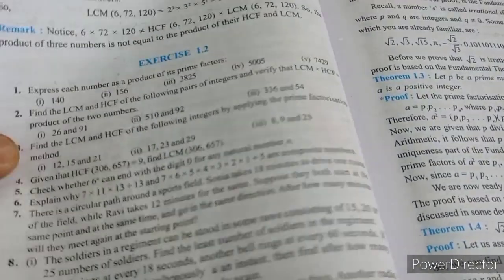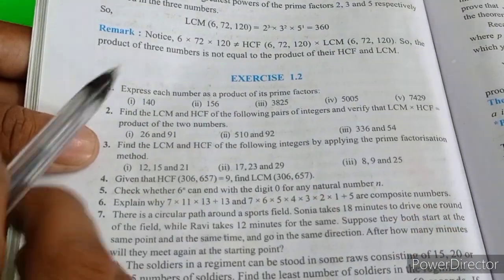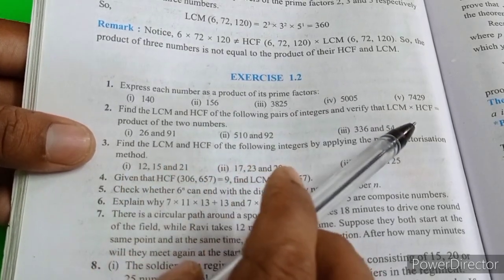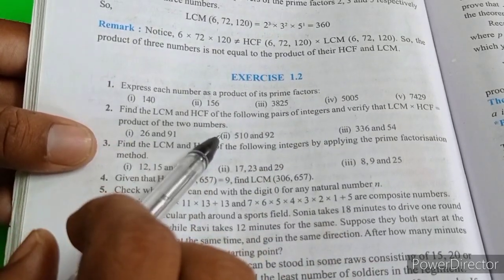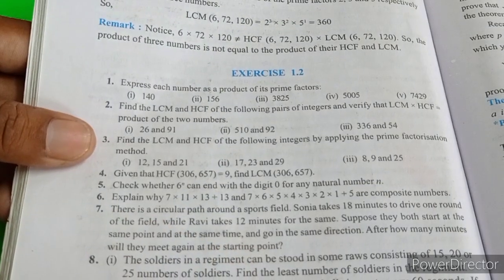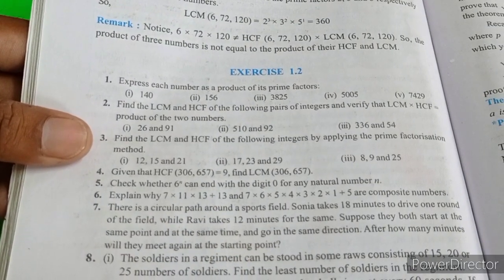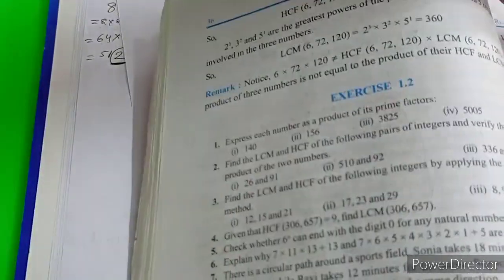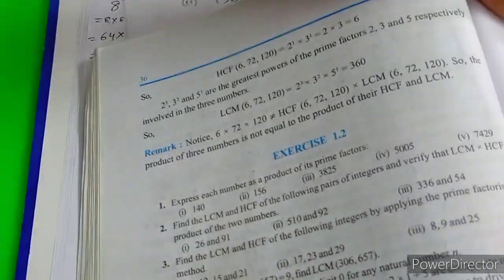Now Question Number 2. Find the LCM and HCF of the following pair of integers and verify that LCM into HCF equals product of two numbers. We need to find that HCF and LCM and also verify the product of two numbers: 26 and 91.